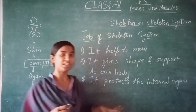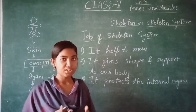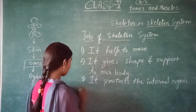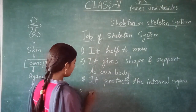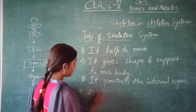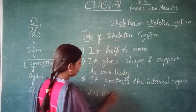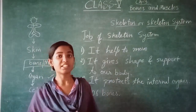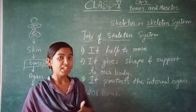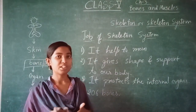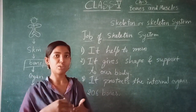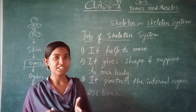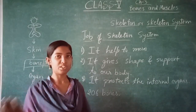Now, the question is: how many bones are present in the human body? In the human body, a total of 206 bones are present. As we are growing up, these bones are also growing up, but after a certain age these bones stop growing further.